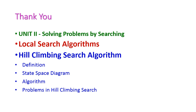Up to this, we have seen the hill climbing search algorithm, which is one of the local search algorithms and is highly dependent on its heuristic values. In this class, we have seen the definition, the state space diagram, and the algorithm of hill climbing search. We have also seen the problems in hill climbing searching technique. In the next class, we will see another important algorithm from the second unit. Thank you.